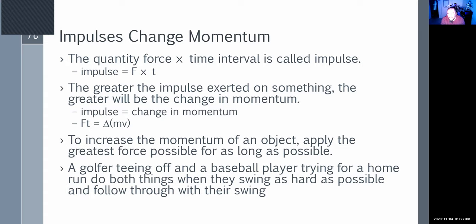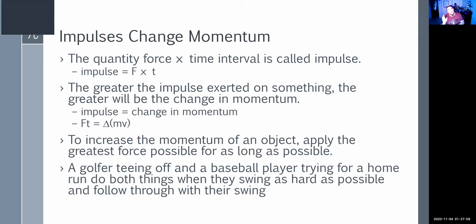A golfer or baseball player would do the same thing. My batting coach told me it's great to have a lot of strength, but some players hit with a ton of force and never hit home runs, while others with moderate force get home runs consistently. The difference is how long the bat rides the ball — the longer the bat stays in contact with the ball, the greater the impulse applied and the greater the change in momentum, so the ball goes farther and faster.